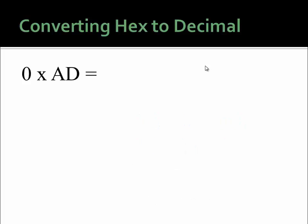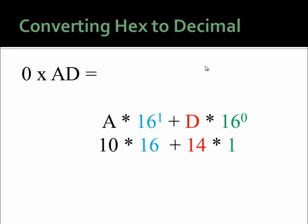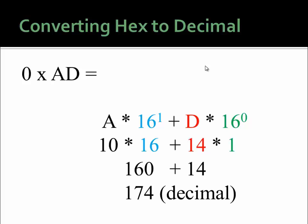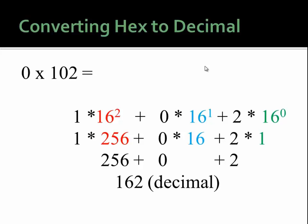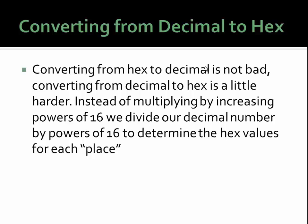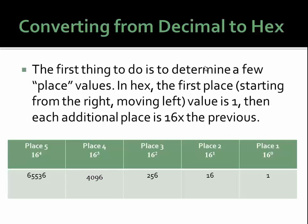Try the next few examples on your own. To convert from decimal to hex, instead of multiplying by increasing powers of 16, we divide our decimal numbers by decreasing powers of 16 to determine our place values. In hex, the first place starting from the right is 1, and each additional place moving left is 16 times the previous. So place 1 is 1, place 2 is 16, place 3 is 256, place 4 is 4096, and place 5 is 65,536.